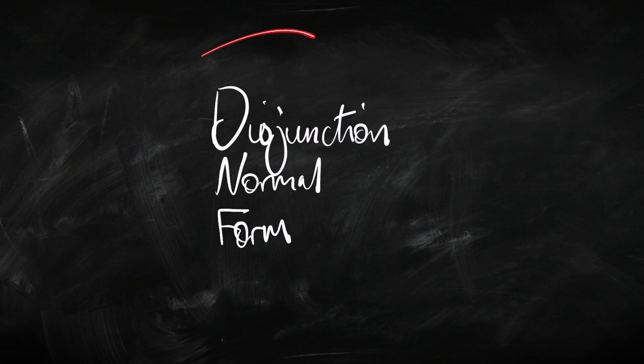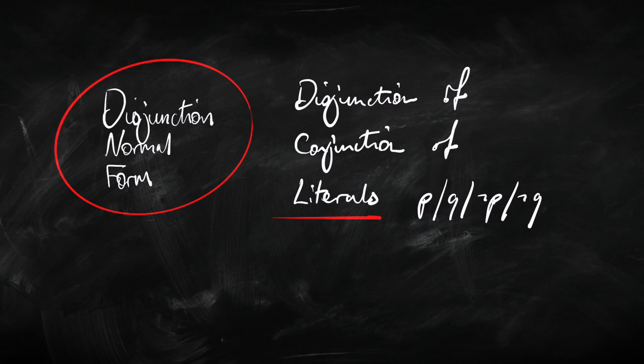Let's have a look at disjunctive normal form. Something's in disjunctive normal form when it is a disjunction of conjunctions of literals. What's a literal? Well, it's a P, a Q, an R, or a not P, a not Q, a not R. So basically we're looking at making literals — all the negation symbols are immediately in front of a P, Q, or R. So if something's in disjunctive normal form, it's also got to be in negation normal form.